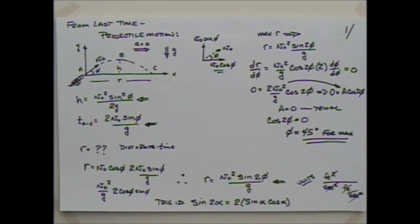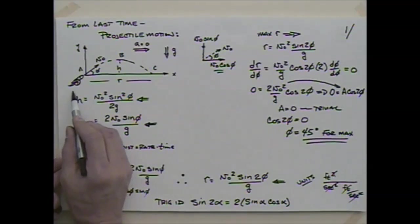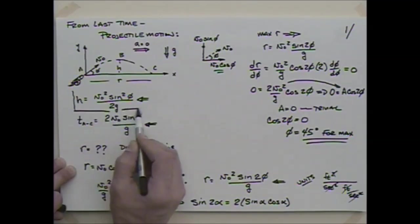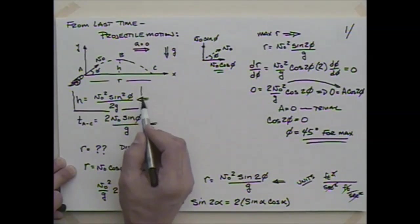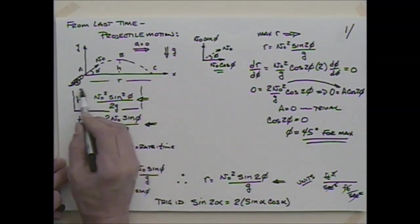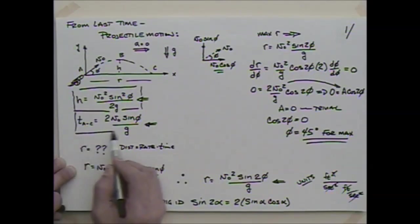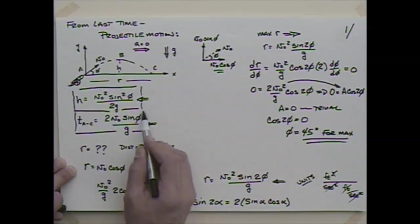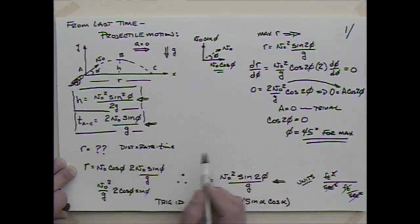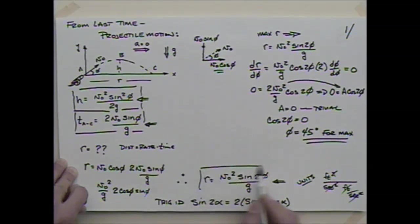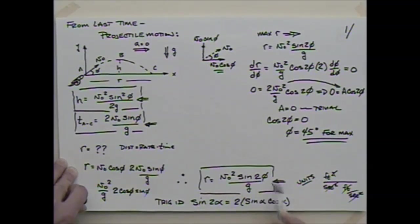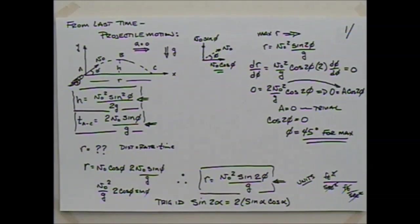Take away from this: you have the formulas for height, time, and range, plus the notion that maximum range occurs at 45 degrees. Historically, the first computers were built to do these ballistic calculations. Once you factor in aerodynamic drag the equations get much more complicated.